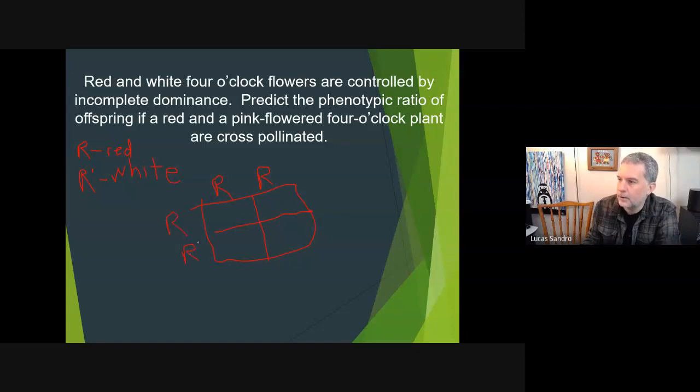We fill in the square and give the ratio. These two are going to be big R big R prime - in other words, heterozygotes. So there's the Punnett square. The ratio: there's two reds and two pinks, which means that is a one to one ratio of red to pink.